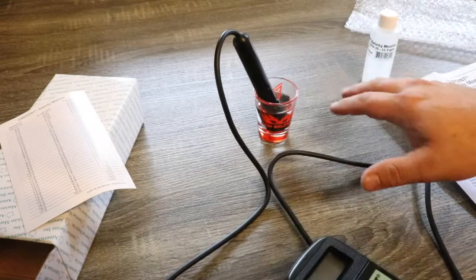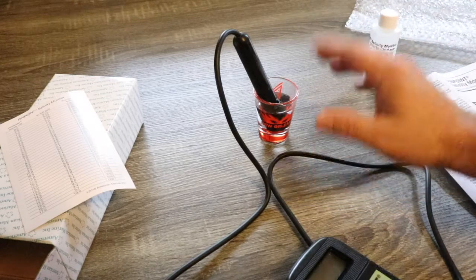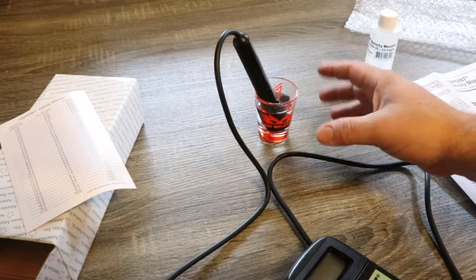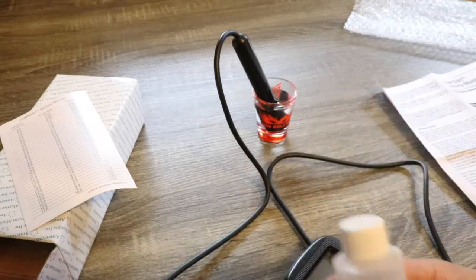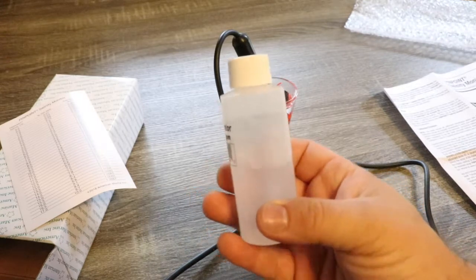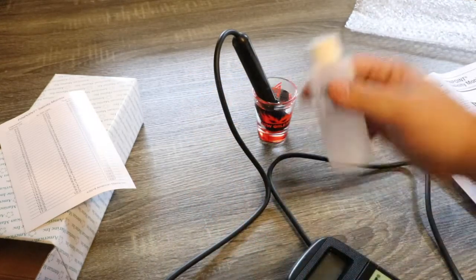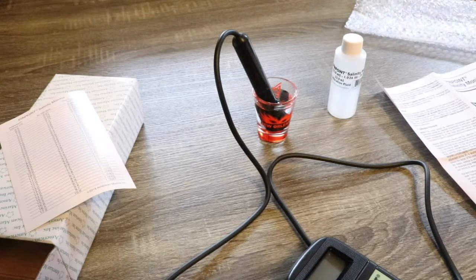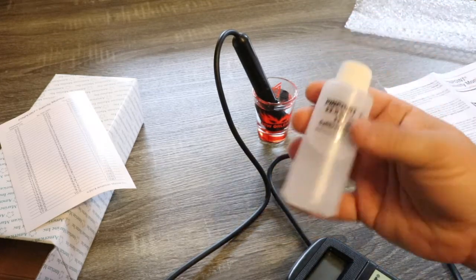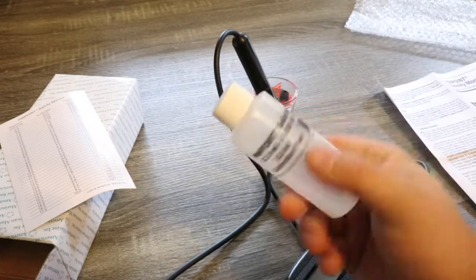All right, so we have the probe and it's important to make sure that the probe has time to get to the same temperature. Using the shot glass, we used up about half of the calibration fluid. Depending on how you go about doing this, you're going to get at least two calibrations from this one bottle. This stuff isn't that expensive either, it's pretty inexpensive.